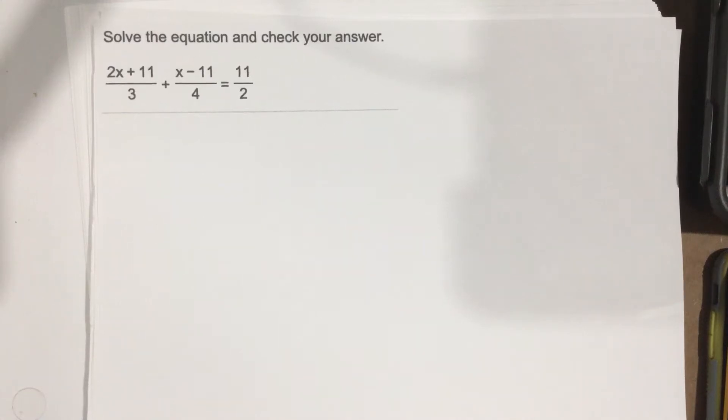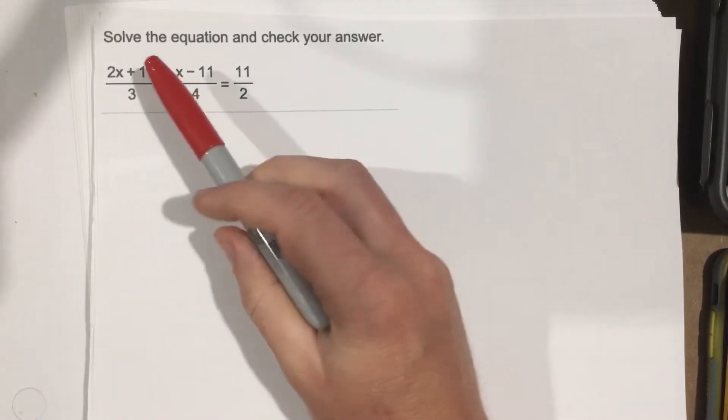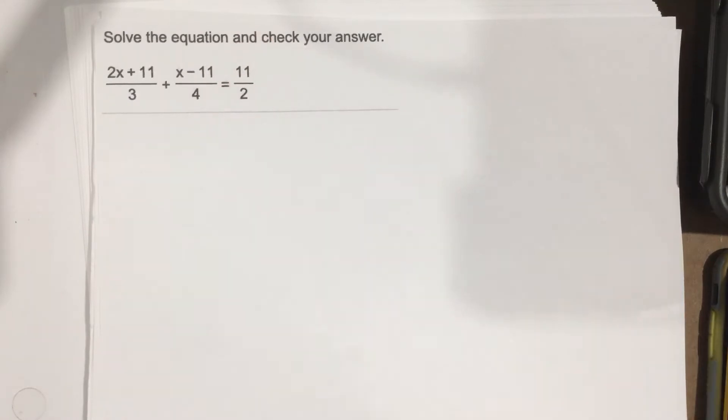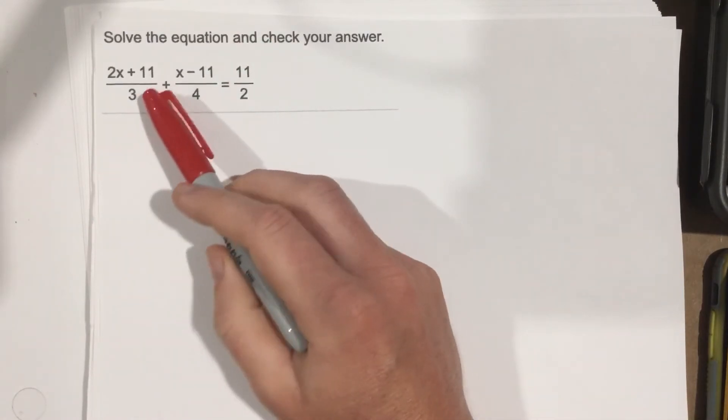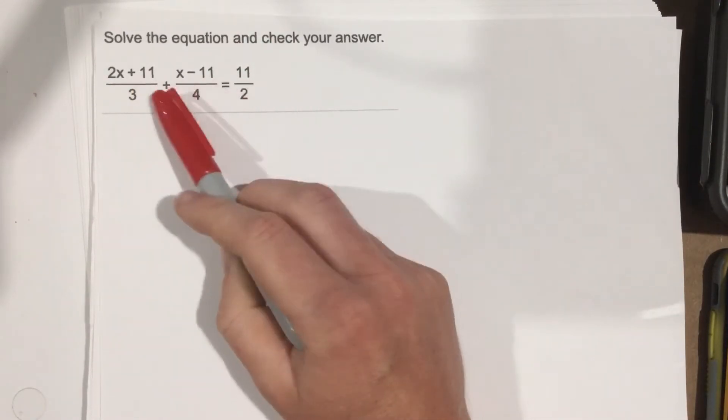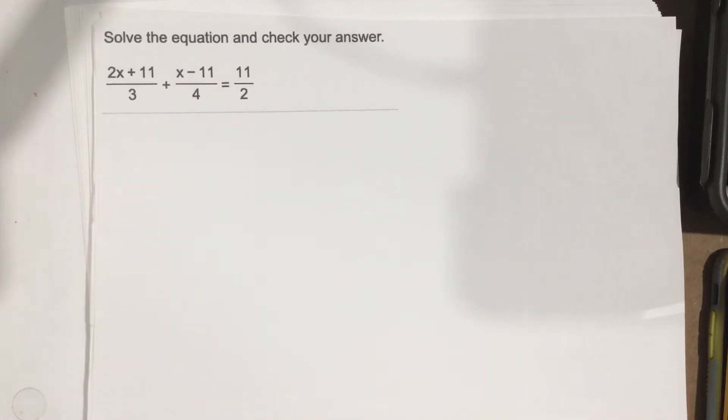This is problem number two from section 2.2. It says solve the equation and check your answer. As you can see here, we have three fractions in the equation. Anytime we run into fractions in an equation, I think it's important to cancel the fractions out so that we can work with an equation that we're used to solving.